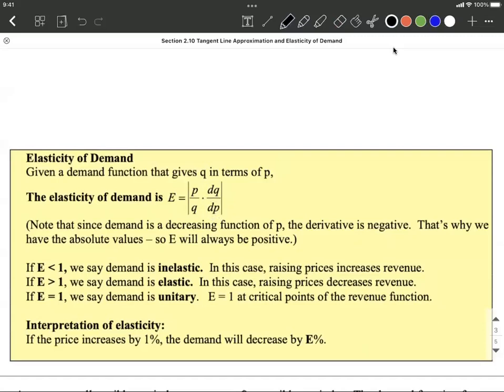What does that mean? That's Leibniz notation. If you wanted to think the same way using prime notation, that means Q prime, the derivative of Q with respect to P, multiplied by P over Q.